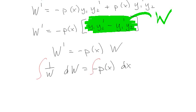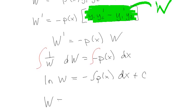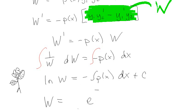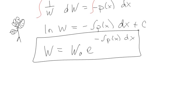This is a separable equation of the form W'/W = -P(x). Integrating both sides gives ln|W| = -∫P(x)dx + C, so the Wronskian equals C·e^(-∫P(x)dx). We now have two different definitions for the Wronskian — the determinant form, and this explicit formula.